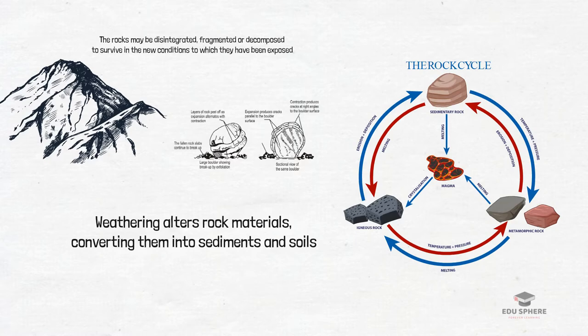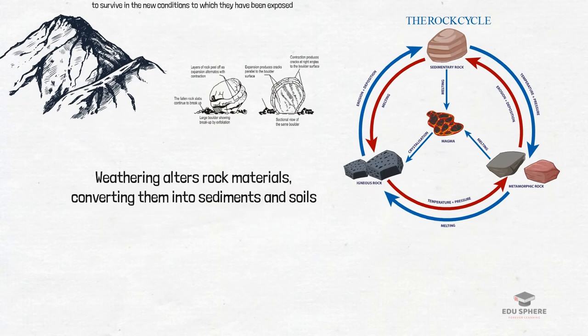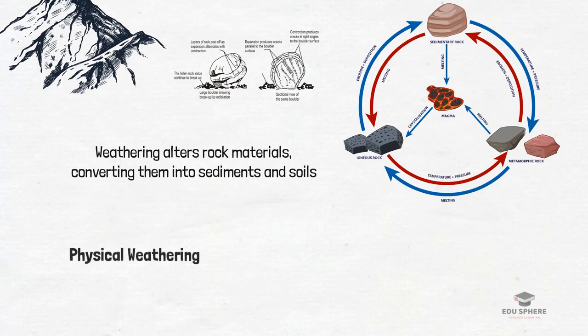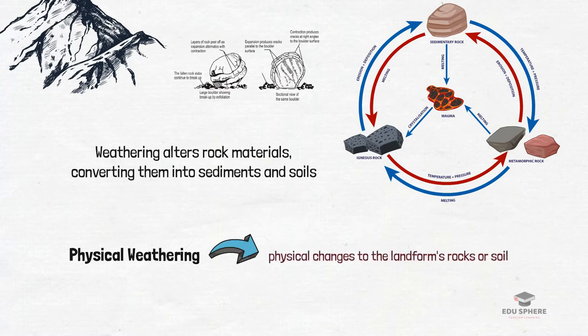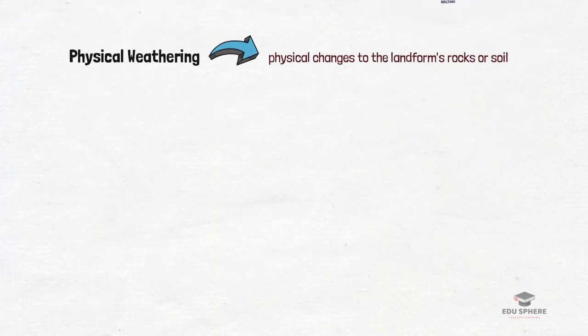In this video, we are going to look at the three types of weathering and their causes. The first one is physical weathering which occurs when there are physical changes to the landforms, rocks or soil.